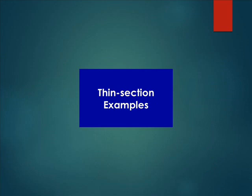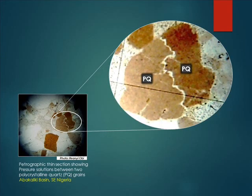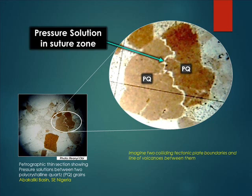I'm going to show you some thin section examples of pressure solutions and related features. This petrographic thin section shows pressure solutions between two polycrystalline quartz grains, taken from an outcrop section in one of the basins in Nigeria. You can see those wavy or contorted white lines separating what we've labelled as polycrystalline quartz (PQ). That contorted white line is the point where pressure is at its maximum, and the pressure solution forms and fills up the space, cementing both grains together.